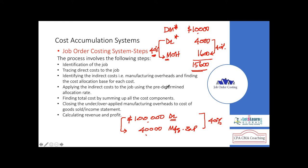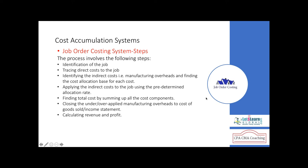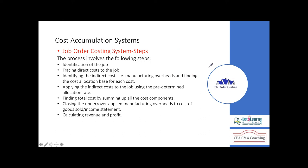Manufacturing overheads can be absorbed based on machine hours, direct labor hours, or direct labor cost, depending on the industry's policy. In the direct labor cost example, 40% of $4,000 = $1,600 overhead, giving a total job cost of $15,600. The three cost components are direct material, direct labor, and manufacturing overhead — always present regardless of the basis used.